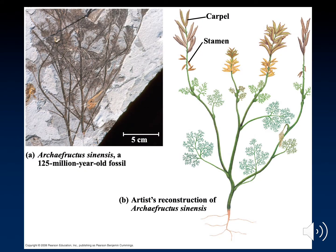Pictured here is a fossil and an illustration of what the first primitive flowers looked like. You notice that there is a carpel and a stamen — the female and male parts. However, there are no showy petals.